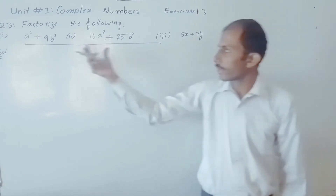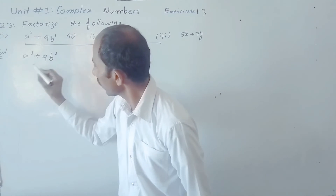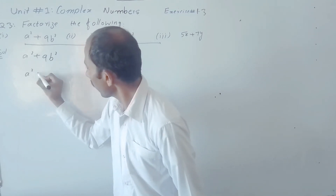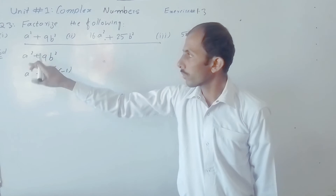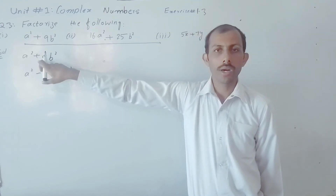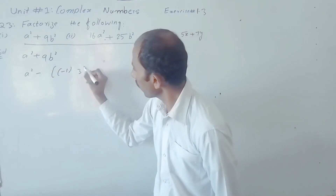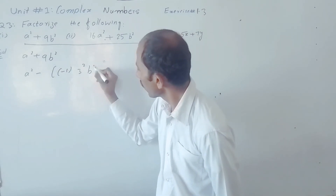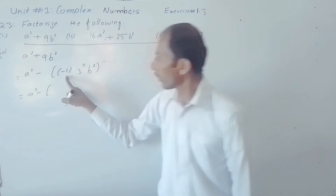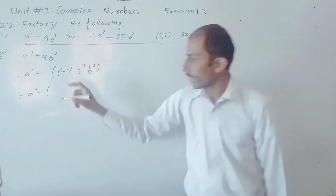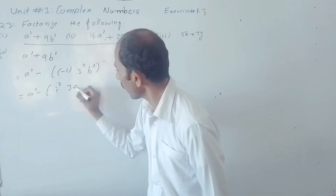So let's start part number one: a² + 9b². So a² minus into minus 1 — since minus into minus is plus, plus 1 can also be written in this form. Also, 9 is the square of 3, so we write 3²b², which is equal to a² minus (−1), and −1 can also be written as iota², so we have 3, a, b.